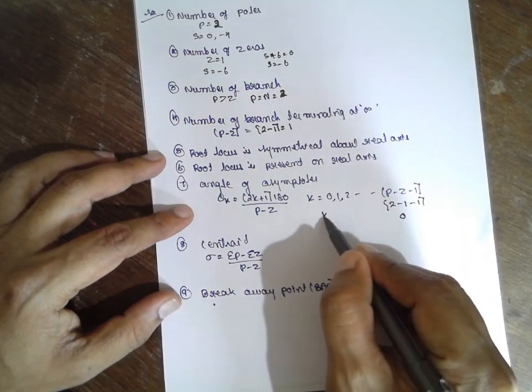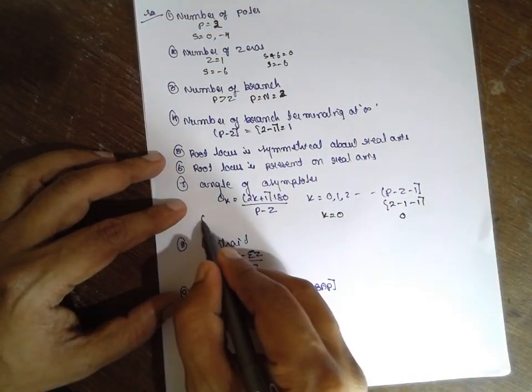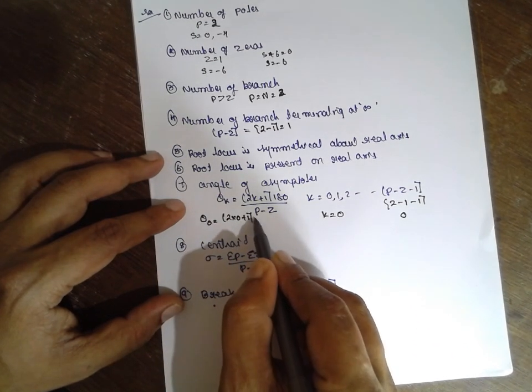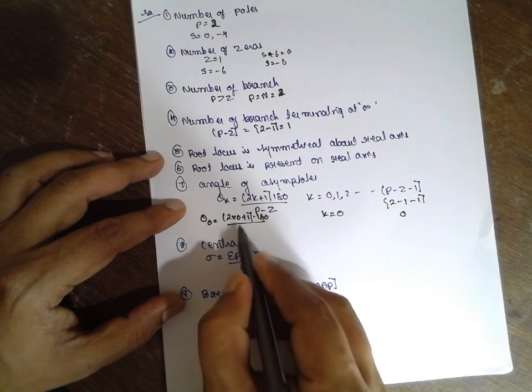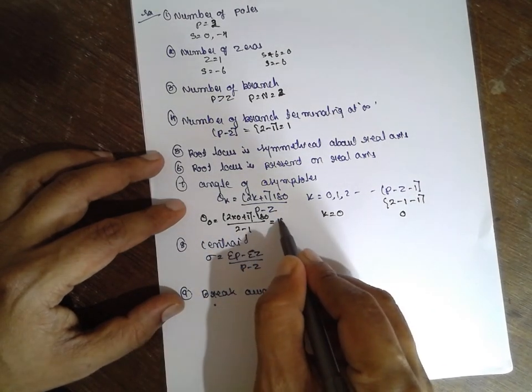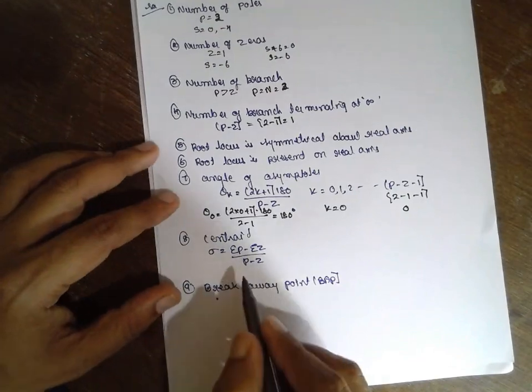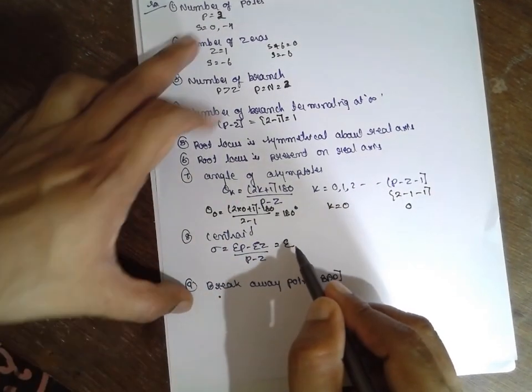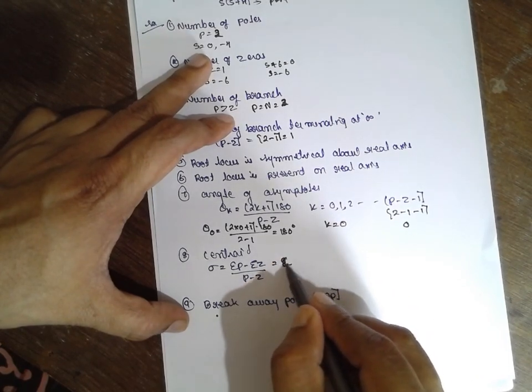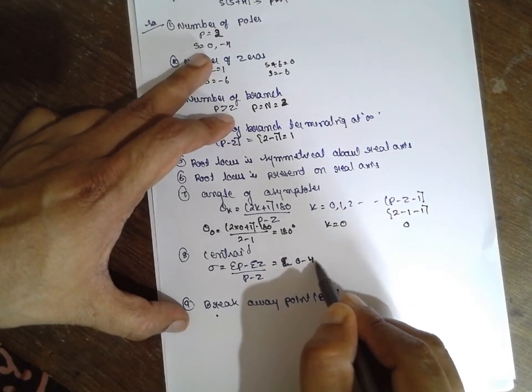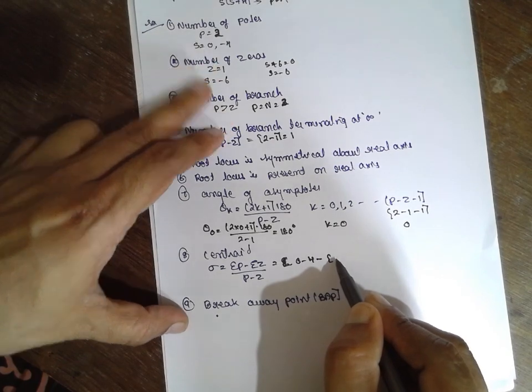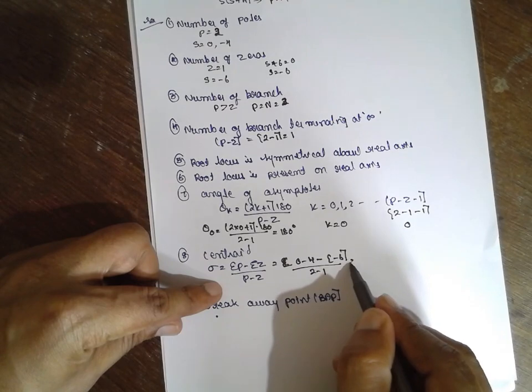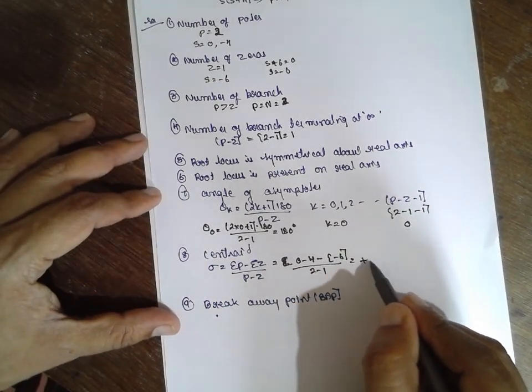Substitute theta: 2 into 0 plus 1 into 180 divided by 2 minus 1 is nothing but 180. Angle of asymptotes - centroid is nothing but sum of poles minus sum of zeros. Sum is 0 minus 4 minus minus 6 divided by 2 minus 1. If you calculate it will be plus 2. Centroid will be plus 2.